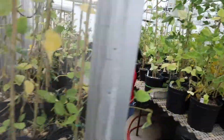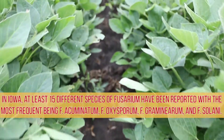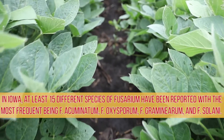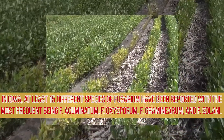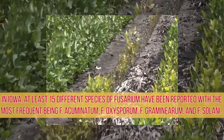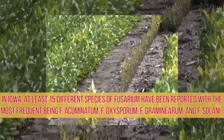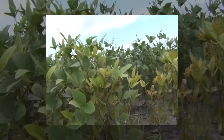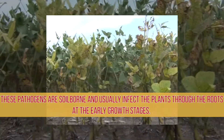Fusarium root rot is caused by a complex of Fusarium species. Here in Iowa, at least 15 species of Fusarium have been reported as Fusarium root rot pathogens. The most frequently associated with the disease are Fusarium acuminatum, Fusarium oxysporum, Fusarium graminearum, and Fusarium solani. These pathogens are soil-borne and usually infect the plants through the roots at the early growth stages.